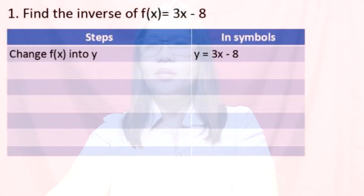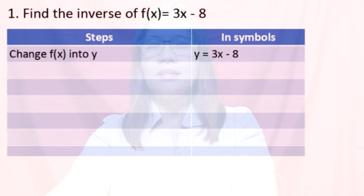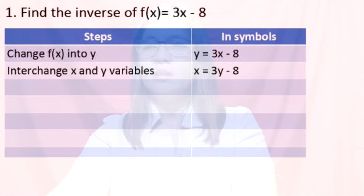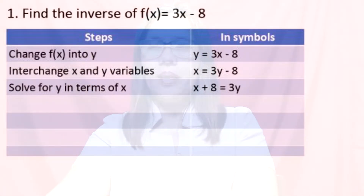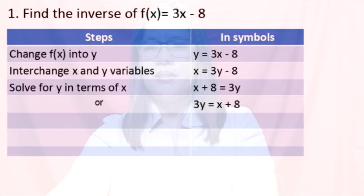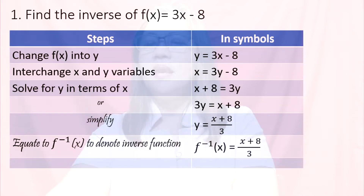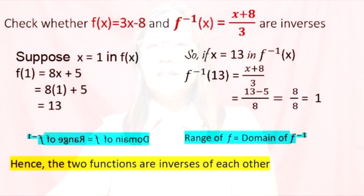Example 1: Find the inverse of f(x) = 3x − 8. First step, change f(x) to y, so y = 3x − 8. Second step, interchange x and y variables, so x = 3y − 8. Third step, solve for y in terms of x: x + 8 = 3y, or 3y = x + 8. Divide both sides by 3, so y = (x + 8) / 3. Therefore, f⁻¹(x) = (x + 8) / 3.